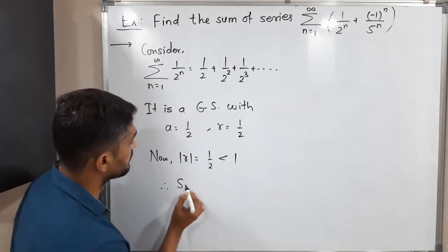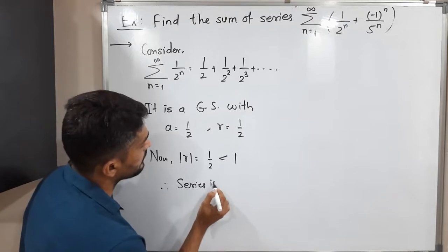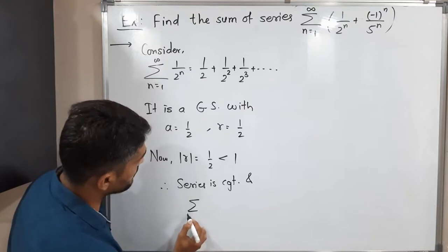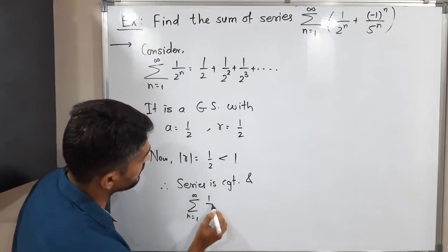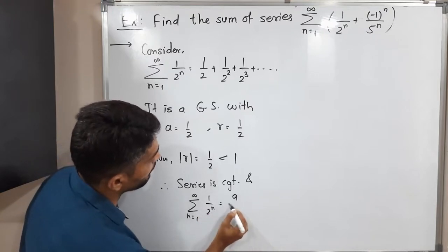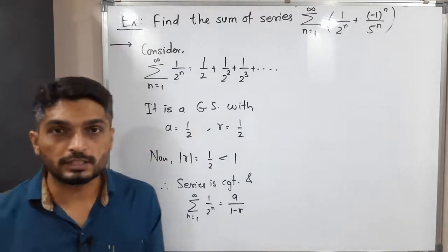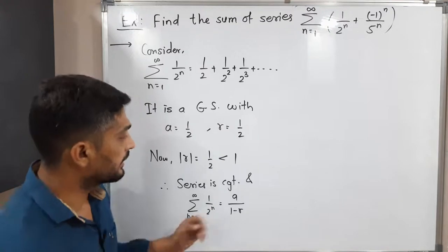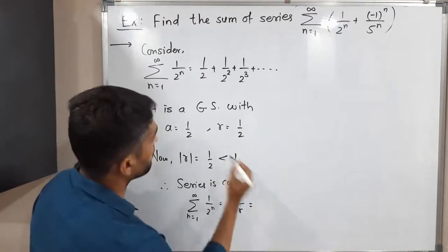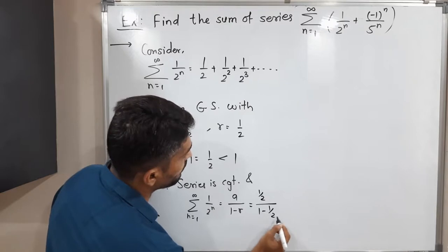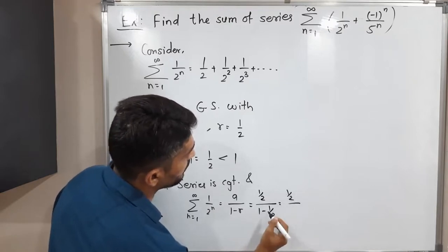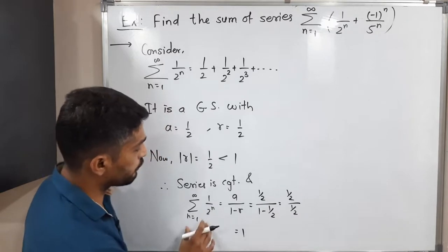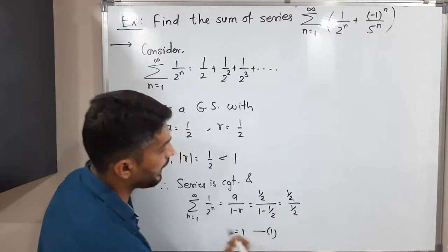Since the series is convergent, its sum is given by a / (1 - r). Putting a = 1/2 and r = 1/2, we get (1/2) / (1 - 1/2) = (1/2) / (1/2). The 1/2 cancels and we get 1. So the sum of this first series is 1.